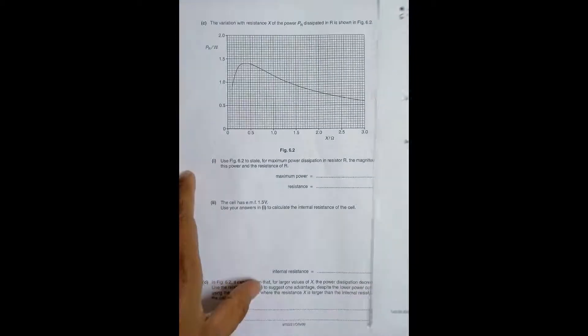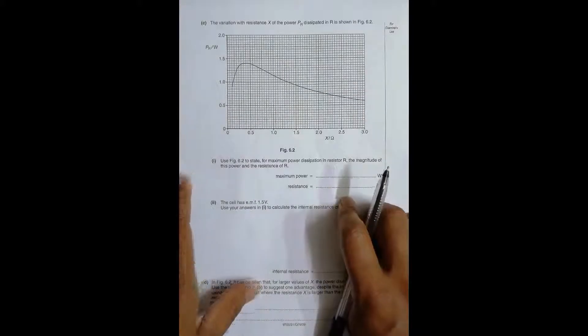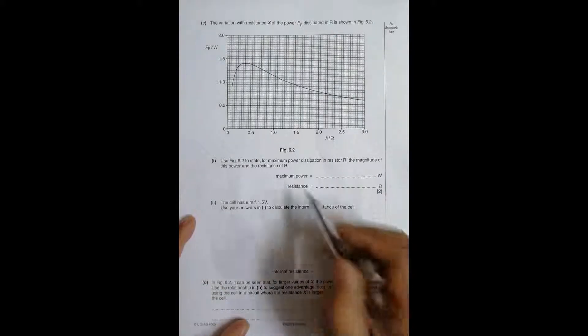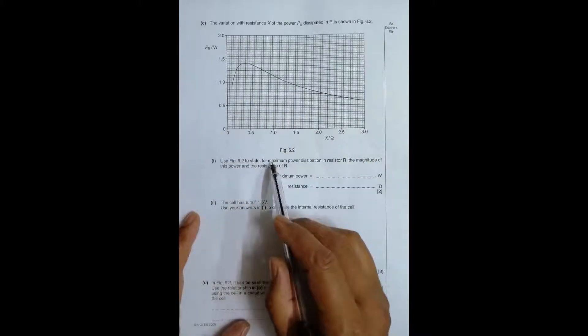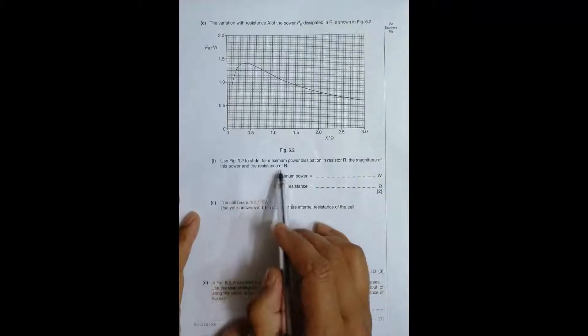In the second question we have a graph here showing the variation with the resistance X of the power PR dissipated in the resistor. As we know the power is less in the beginning at lower values of X, then it increases and becomes peak value somewhere and again the power decreases.